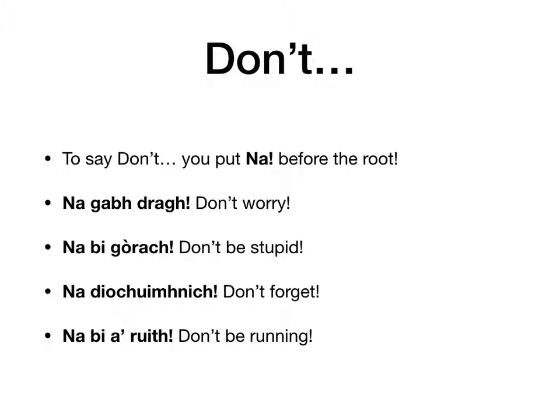Moving on — this is a simple thing: if you want to tell somebody don't do something, it's dead simple, you just put the word 'na' in front of it. For example: na gabh dragh — don't worry; na bi gòrach — don't be stupid; na dìochuimhnich — don't forget; na bi a' ruith — don't be running. You can say 'na ruith' (don't run) but 'na bi a' ruith' means 'don't be running' — you can use it with bi as well, with the verbal noun.